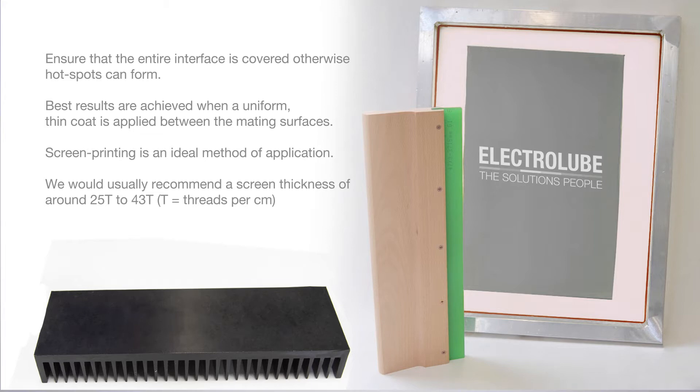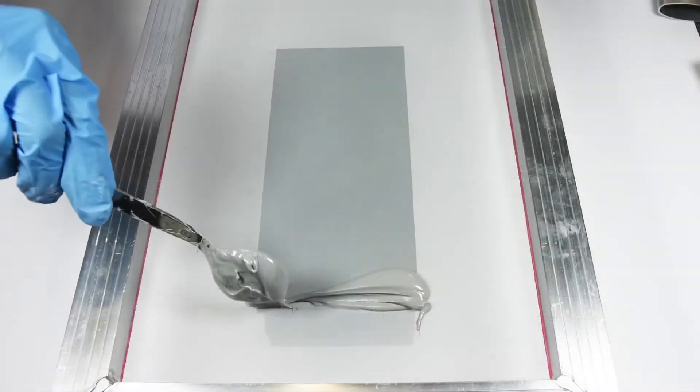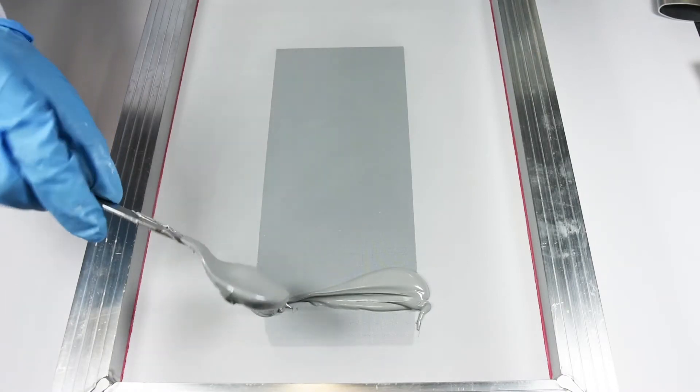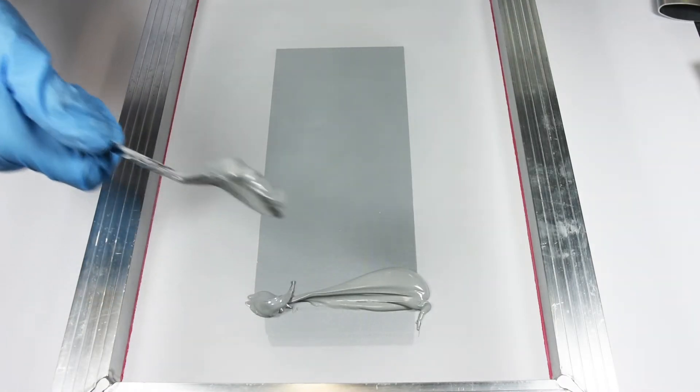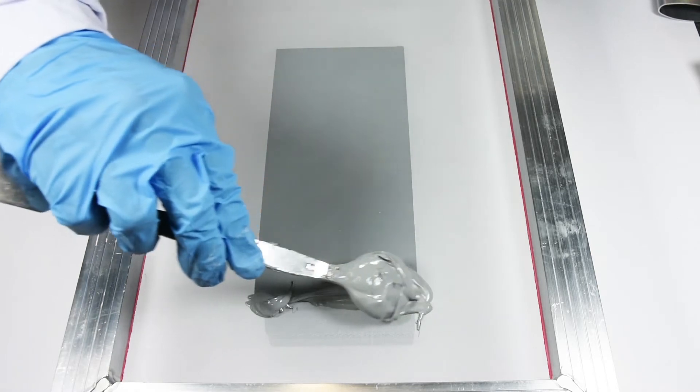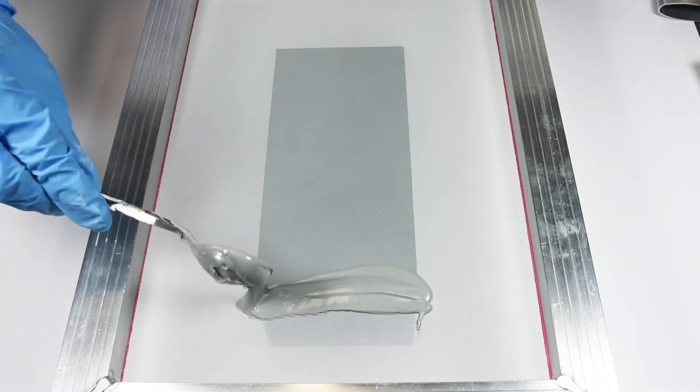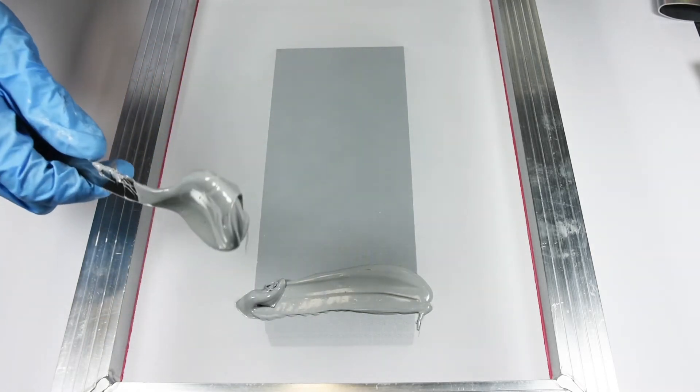Lay the cleaned heat sink or substrate face up on a flat work surface. Place the screen evenly over the surface and apply a thick line of phase change material at the far end of the screen using a spatula.